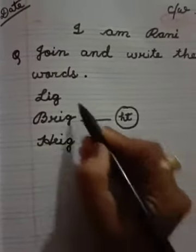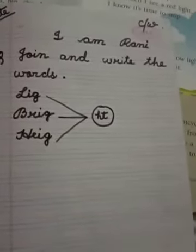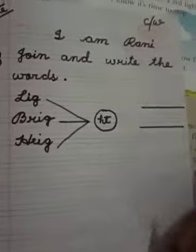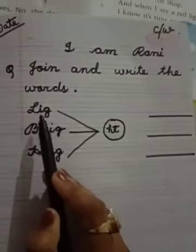Now give one line here. One more line here. One more line here. Done. Give here one dash. And then one more dash. And again one dash. Written. Now we will join this word. Alright children. L-I-G.